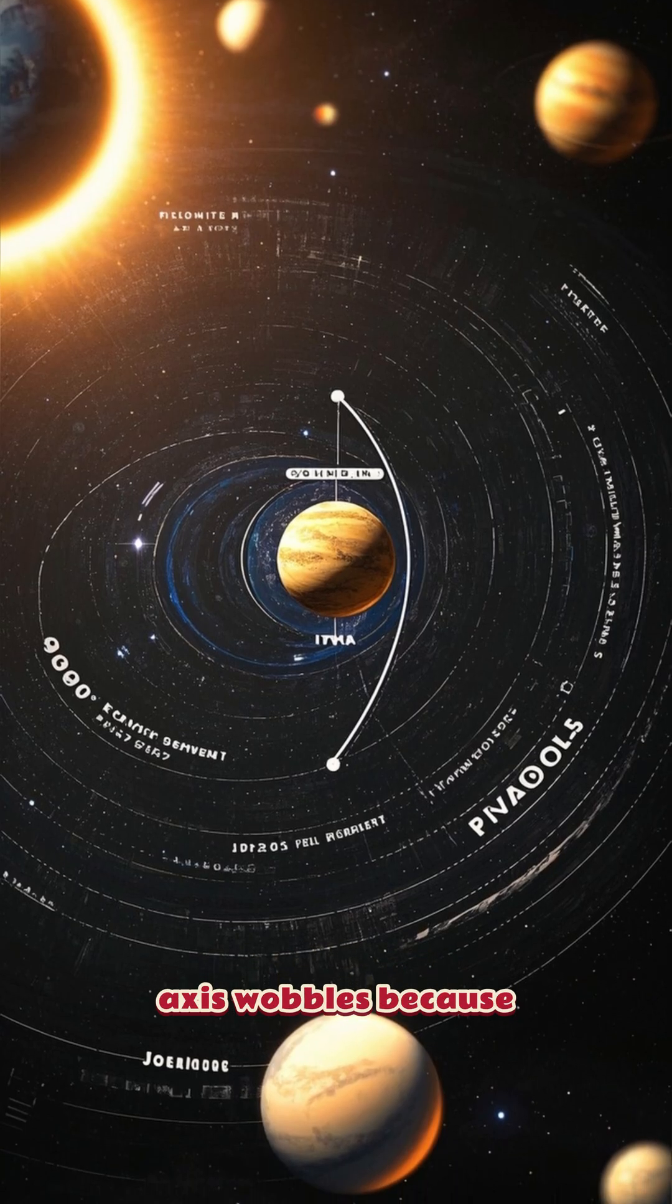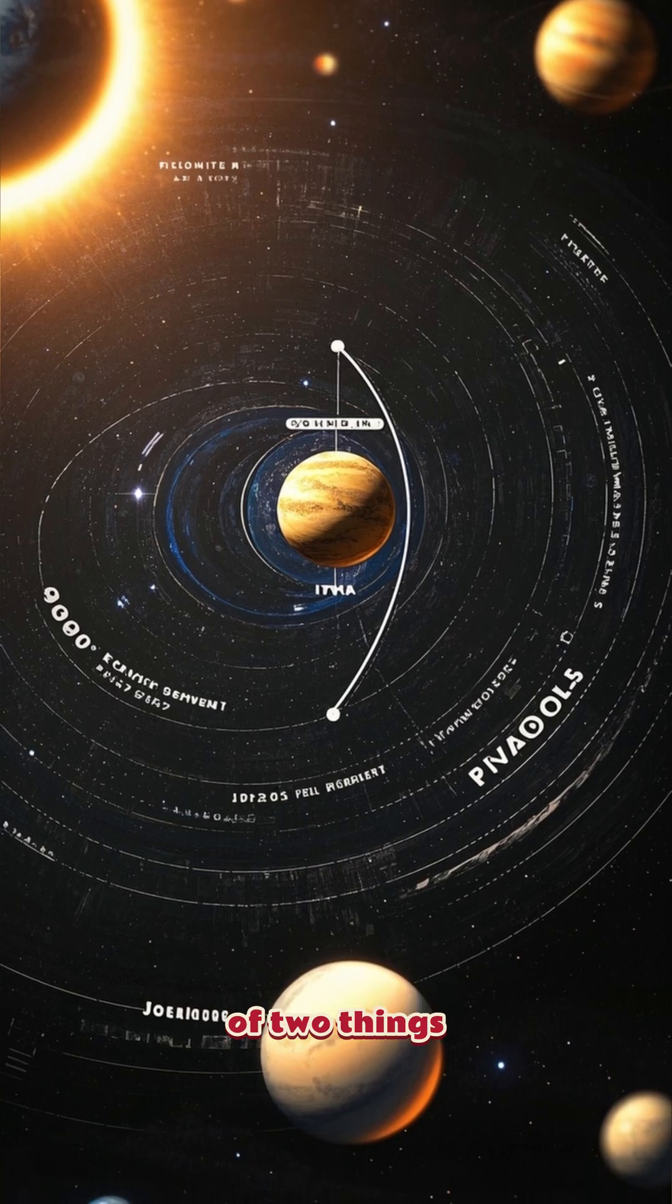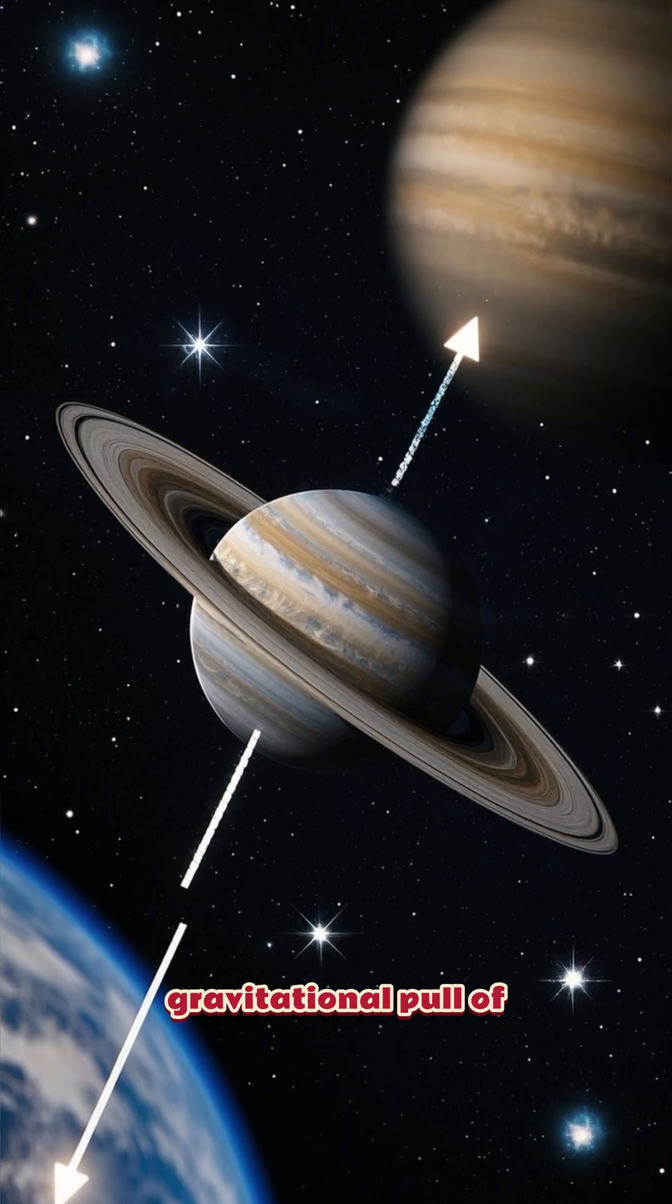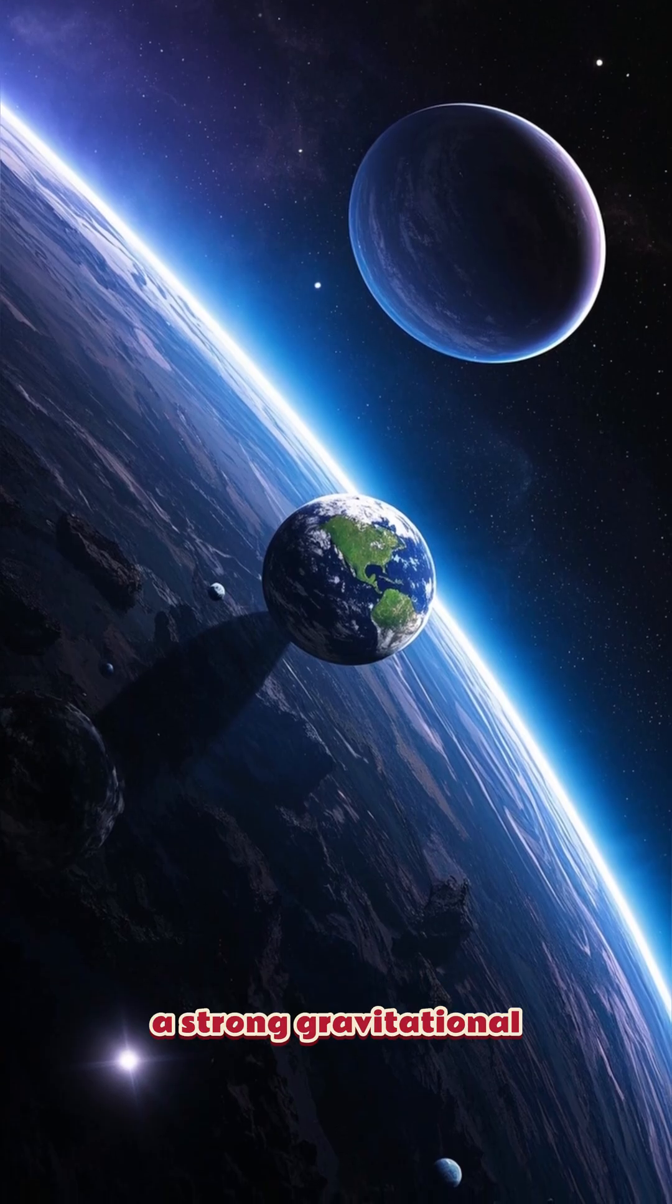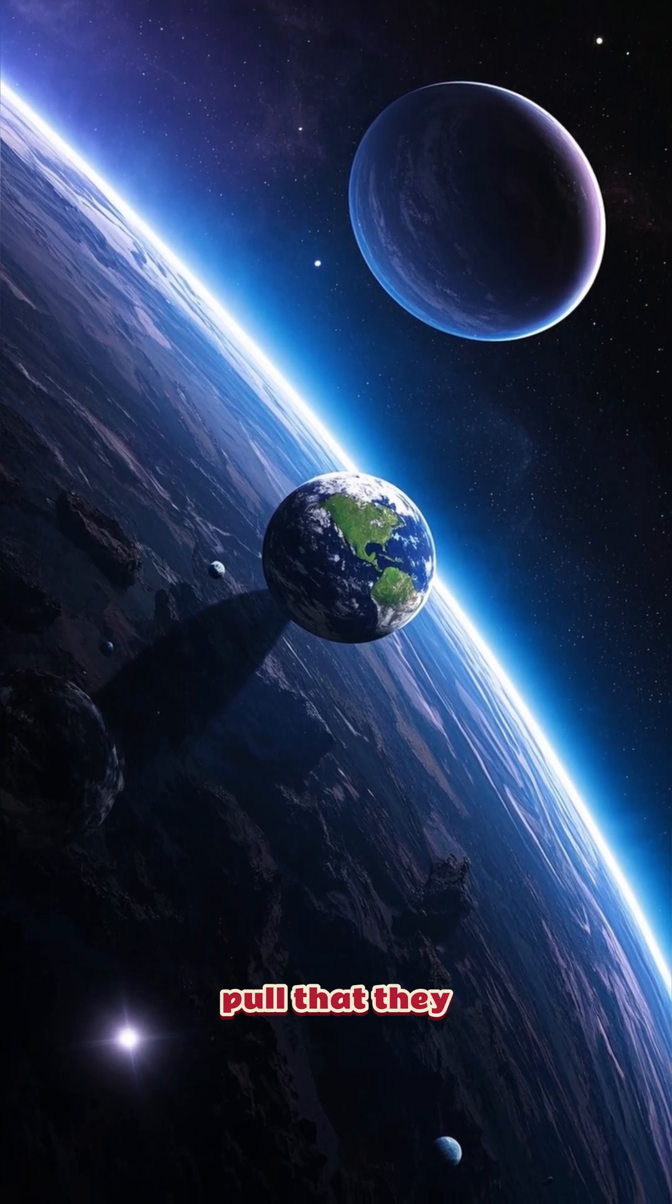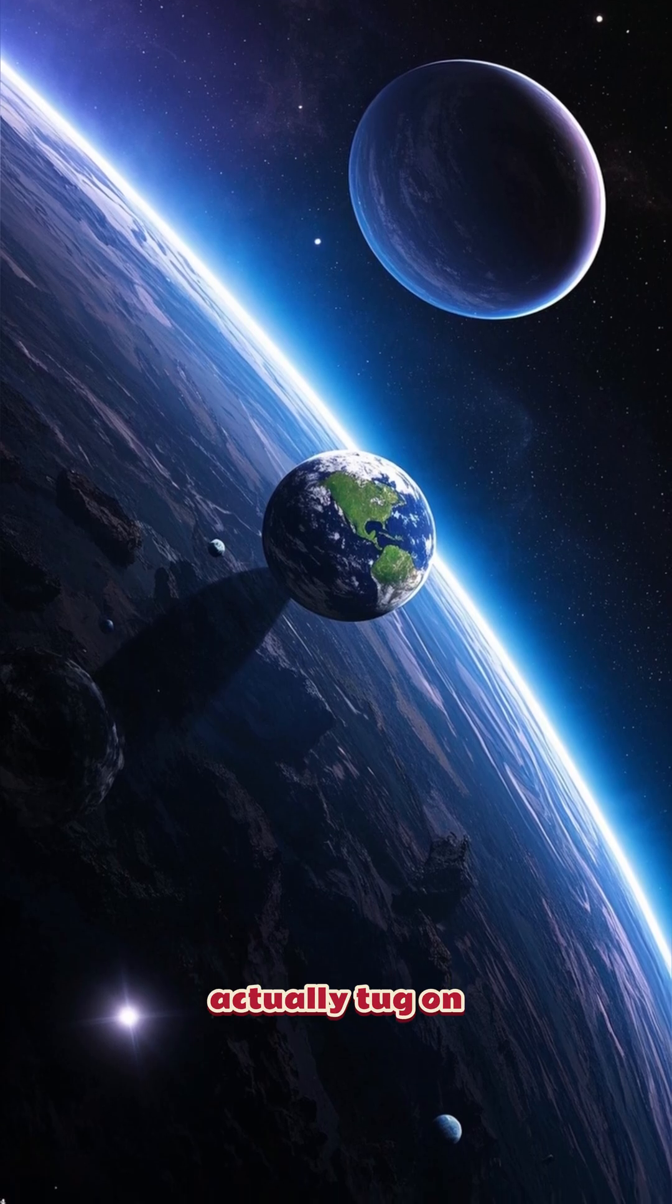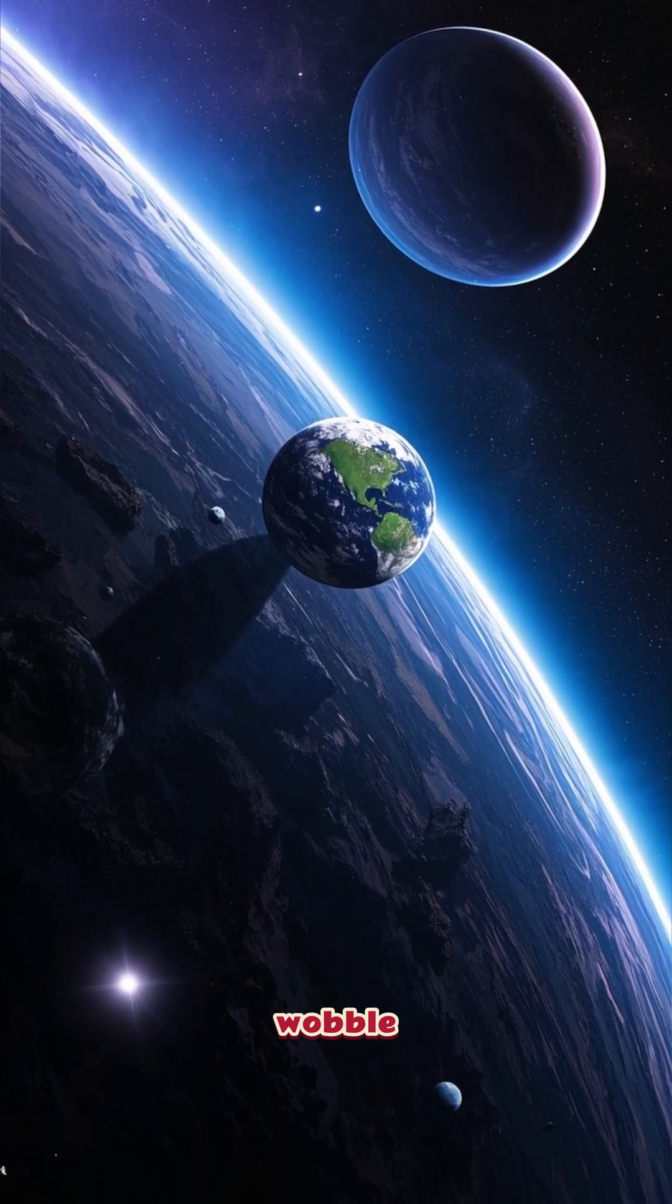The Earth's spin axis wobbles because of two things. One is the gravitational pull of other planets, mainly Jupiter and Neptune. They have such a strong gravitational pull that they actually tug on the Earth and cause it to wobble.